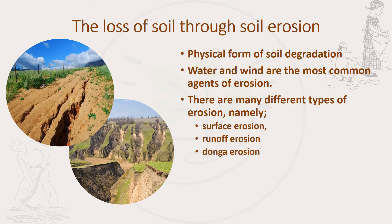Now let's discuss the loss of soil through soil erosion. Soil erosion is basically the physical form of degradation. When we talk of soil erosion, this is the loss of soil itself. When soil erodes, it can either be carried away by wind or by water. Those are the most common agents of erosion.